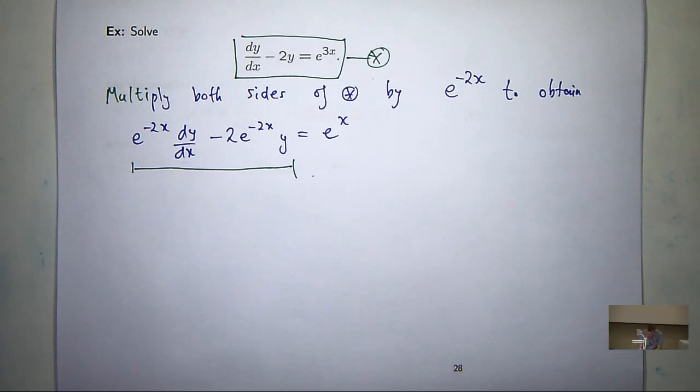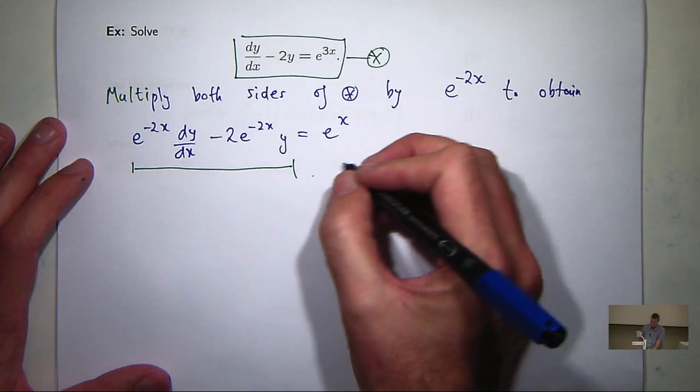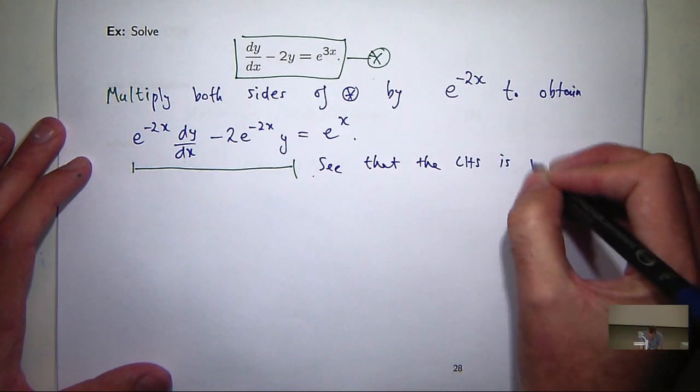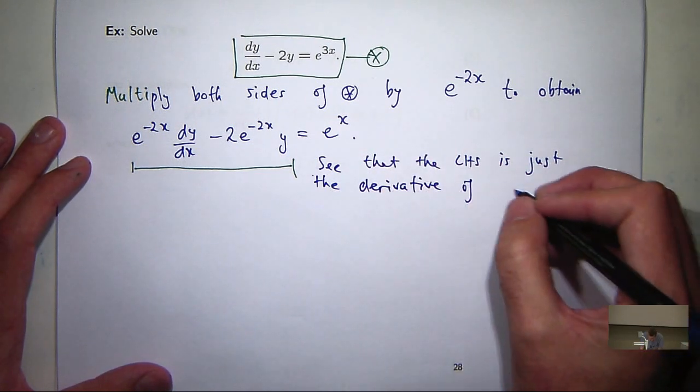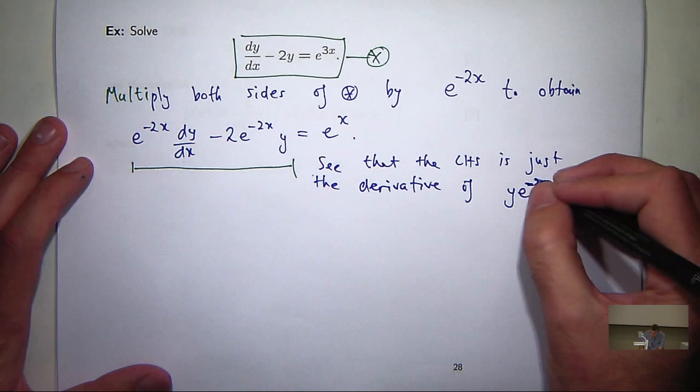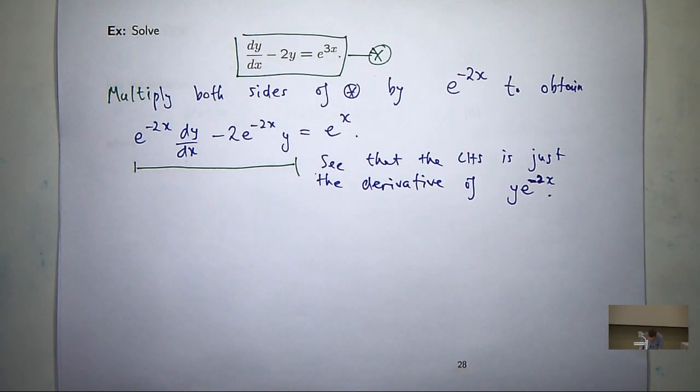Yeah, y times e to the minus 2x. Okay, so the left-hand side can be collapsed down to the derivative of a product. Now you can just verify this by the product rule. So let me show you. This is y times e to the minus 2x. If you take the derivative of this product, because it's a function of x times another function of x, if you take the derivative, then you actually get this left-hand side.